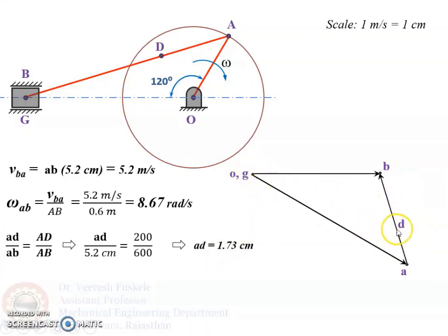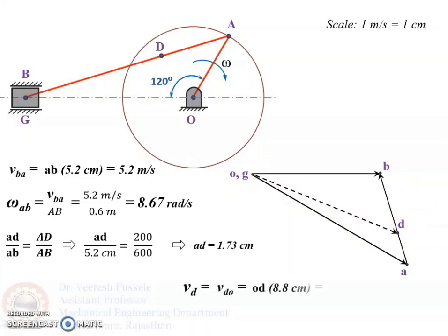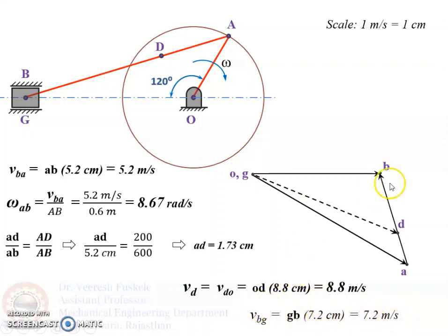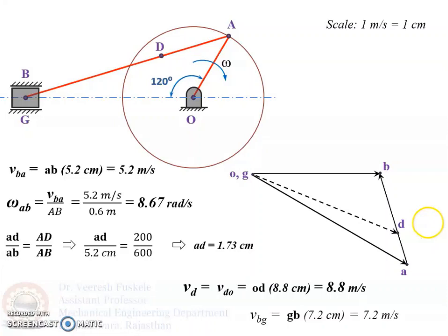We join G to D to get the velocity of point D. Measuring vector OD gives 8.8 cm, so the velocity of D is 8.8 meters per second. The velocity of the slider is found by measuring vector GB as 7.2 cm, giving a slider velocity of 7.2 meters per second. So the angular velocity of link AB is 8.67 radians per second, the velocity of point D is 8.8 meters per second, and this is how you draw the velocity diagram for the slider crank mechanism.